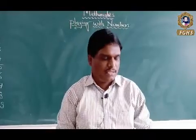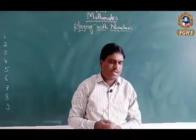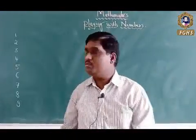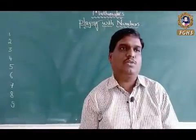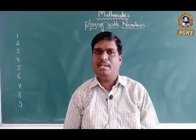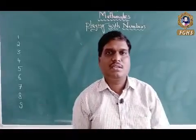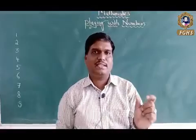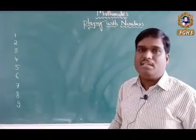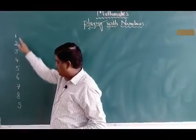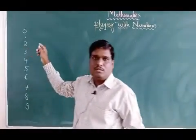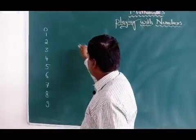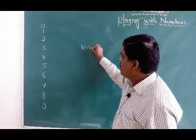We represent so many things using numbers in our daily life. The rupee value, the money that we pay to others, the money that we get from others — all carry a value. For example, 100 carries a value. To represent 100, I use the digit 1 followed by two zeros. So this becomes 100.